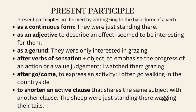Present participles can also be used as an adjective to describe an effect, e.g. interesting — 'I seem to be interesting for them.' As a gerund (a noun made from a verb) — 'They were only interested in grazing.' After verbs of sensation plus object, to emphasize the progress of an action — 'I watched them grazing.' After go/come, to express an activity — 'I often go walking in the countryside.' To shorten an active clause sharing the same subject — 'The sheep were just standing there wagging their tails.'